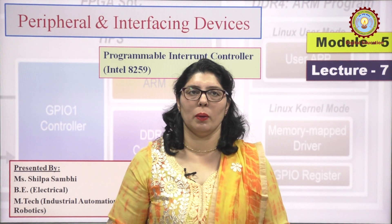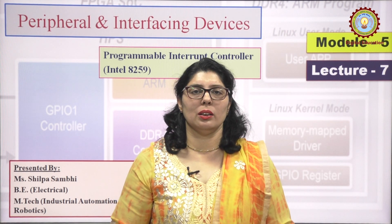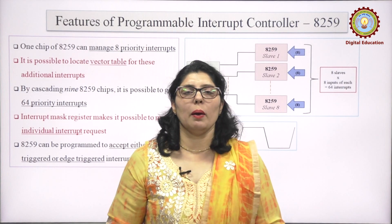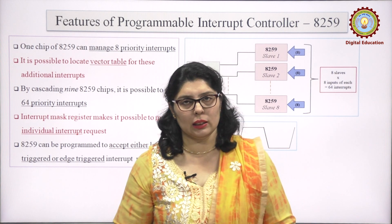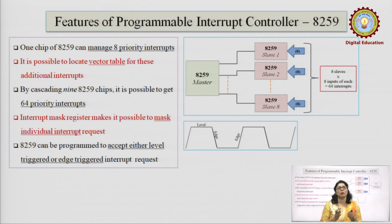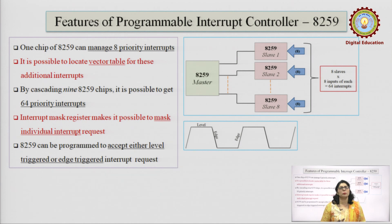Hello friends and welcome to the next lecture on Programmable Interrupt Controller, which is Intel 8259. So far we have seen so many interfacing devices and now this is the last one, the Programmable Interrupt Controller. We have seen what interrupts are and the different varieties. If you connect any external device with the processor and it requires services, that device needs to send an interrupt to the processor. Let's see how a hardware chip, the 8259, helps us handle interrupts.